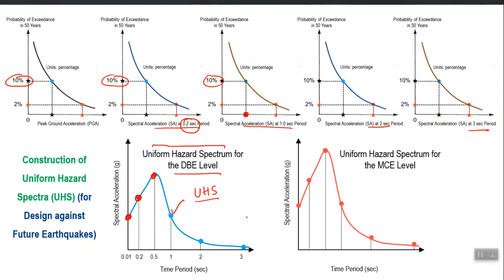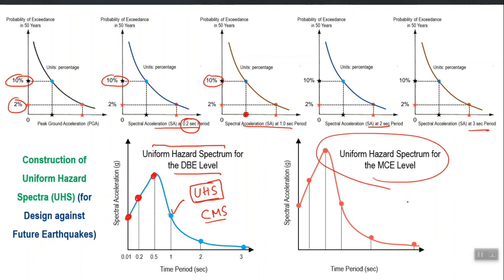Nowadays there is a more advanced concept called the Conditional Mean Spectrum (CMS), which is a different methodology, but here I will focus on UHS. The red line represents all numbers picked for a different hazard definition — 2 percent probability of exceedance in 50 years — so it is obviously higher than the blue line; this is the MCE-level spectrum. In PBD, if I want to perform DBE-level dynamic analysis I match ground motions with the blue line, and for MCE-level analysis I match them with the red line.